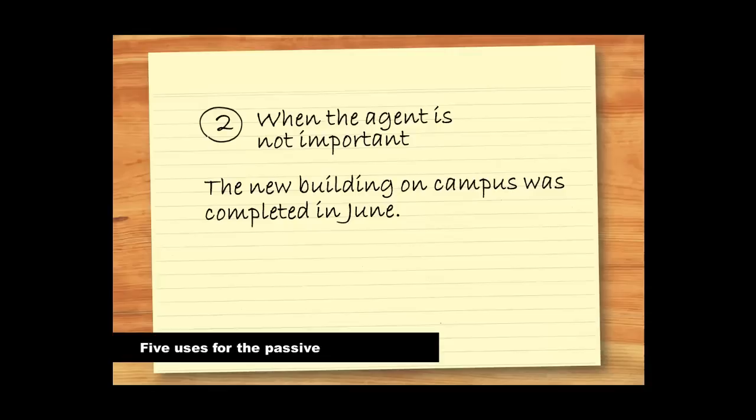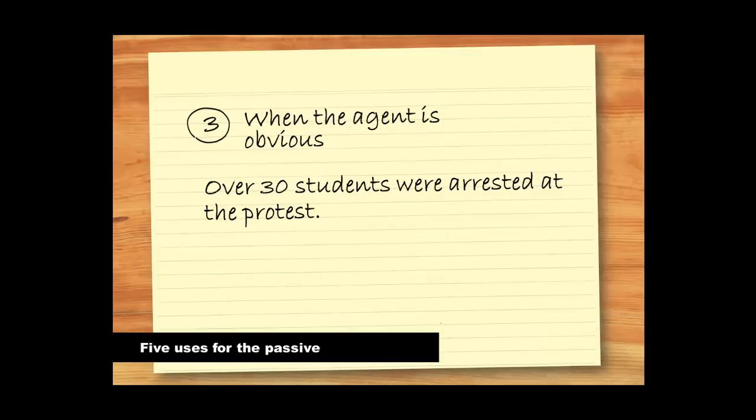Secondly, we use it when the agent isn't important. In this example, we don't know and we don't care who built the building. Next, we can use the passive when the agent is obvious or previously mentioned. Because we can anticipate that the police have made the arrests, we don't need to include them in the sentence.